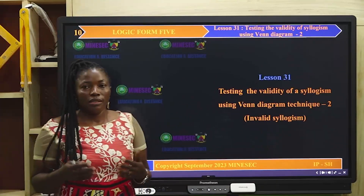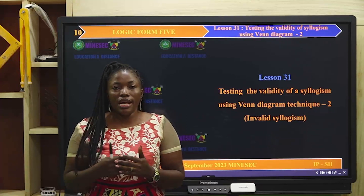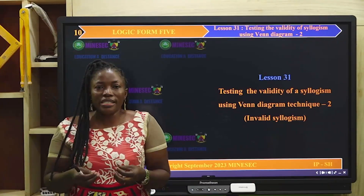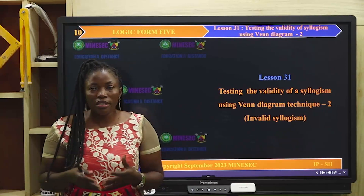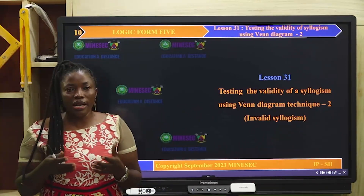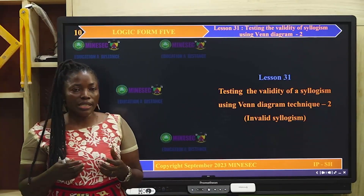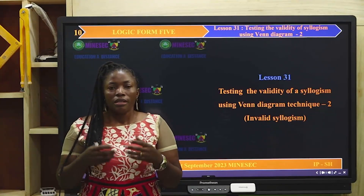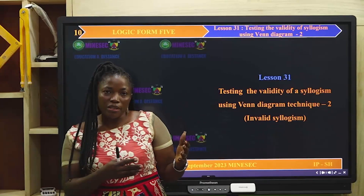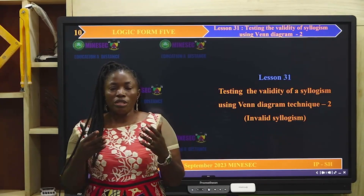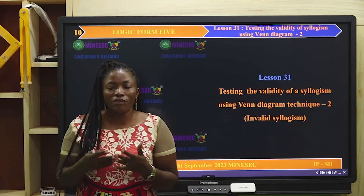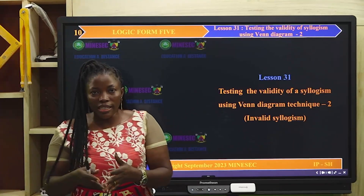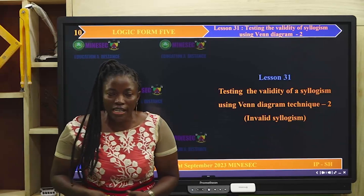Now this is our lesson — Lesson 31. Testing the validity of arguments using the Venn diagram technique. That is the second part of this topic. During the first part, we saw the testing of validity of arguments using the Venn diagram technique in the case of a valid argument.